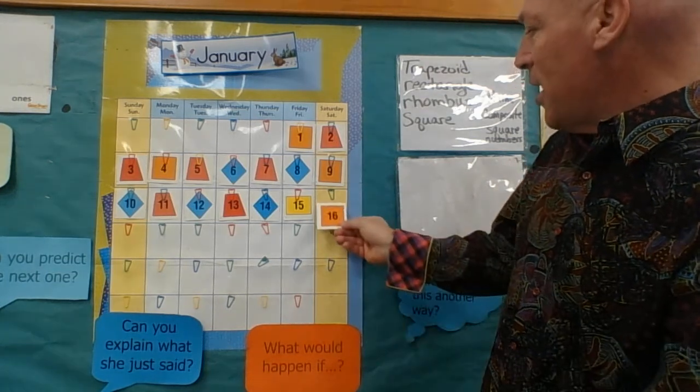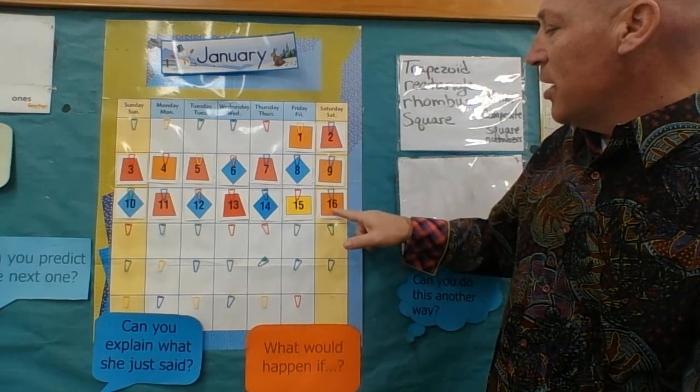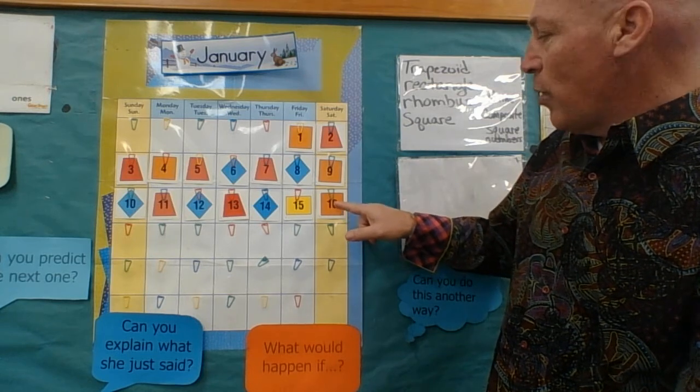Okay, let's just put up Friday or Saturday. Well, we knew that was going to be a square number because four times four or four squared is 16.